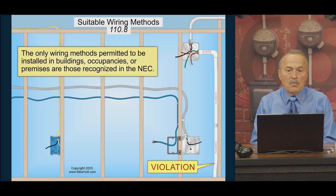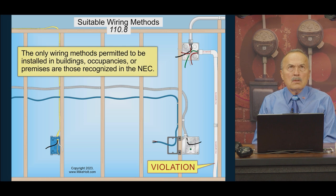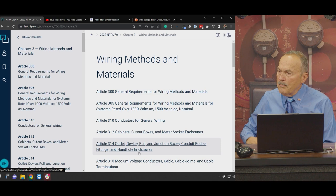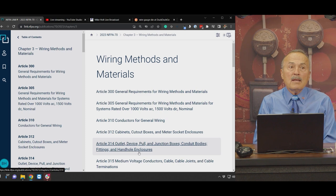Brian, why don't you take me to NFPA and let's go to Chapter 3. What is Chapter 3? Chapter 3 is Wiring Methods and Materials. Okay, so Chapter 3 is Wiring Methods and Materials.